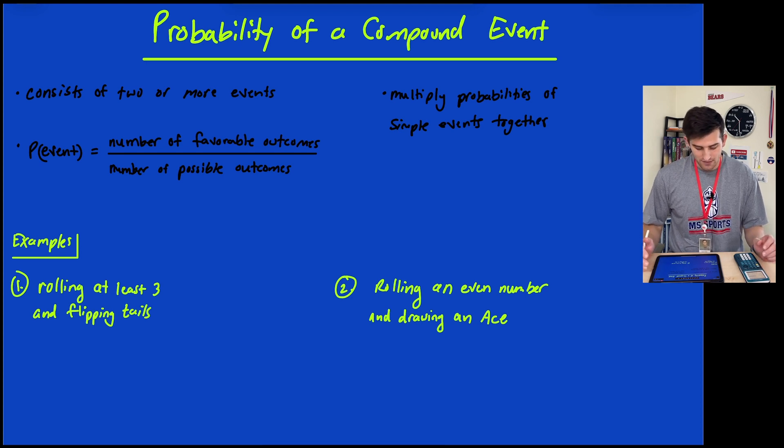A compound event consists of two or more events. Remember, the probability of an event is the number of favorable outcomes divided by the number of possible outcomes. For compound probability, we multiply the probabilities of simple events together.